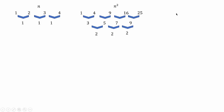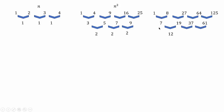Similarly, let's look at another pattern. We proceed the same process of finding the differences, again finding the differences until we reach a common difference. We use three steps to find the common difference here, so its general term is n cubed.